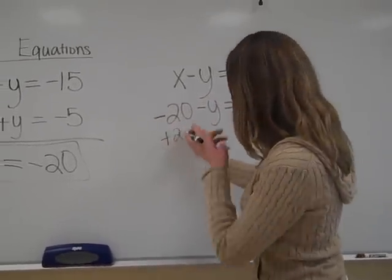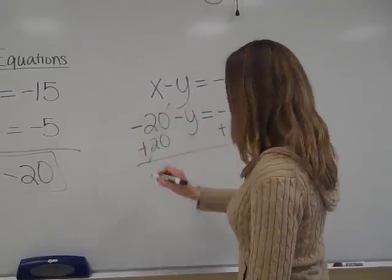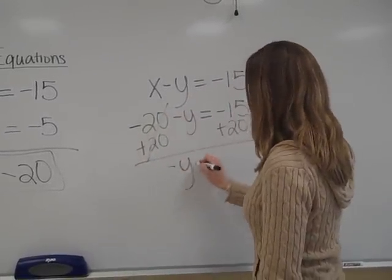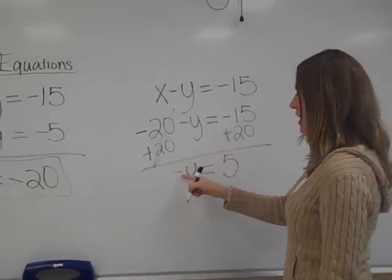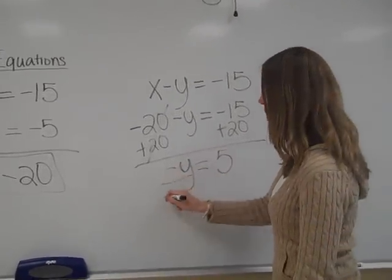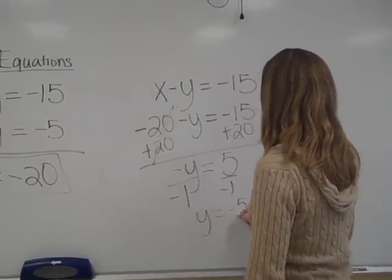I'm going to add 20 to both sides. The 20's cancel out. I get negative y is equal to 5. Since I can't have a negative y, I'm going to divide by negative 1. So, y is equal to negative 5.